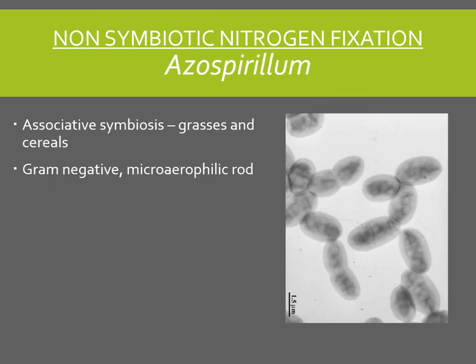The next organism under non-symbiotic nitrogen fixation is Azospirillum. Azospirillum is not completely non-symbiotic — it forms associative symbiosis with certain grasses and cereal crops. Associative symbiosis means it is predominantly present on the surface or colonizes the surface of the plant. It does not penetrate deeper into the tissue and remains on the surface, which is why it is called associative symbiosis. In a few species it can also be present as an endophyte that penetrates slightly into the tissue, but in most species it remains only on the surface.